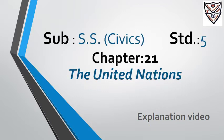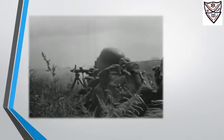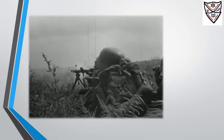Subject: Assess Civics Standard 5, Chapter 21 — The United Nations. The last century saw two world wars that caused a lot of bloodshed. Several thousands of people lost their lives, many were crippled, and some places were completely devastated.